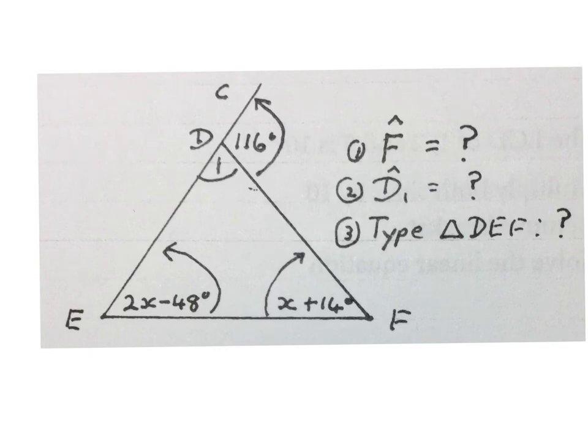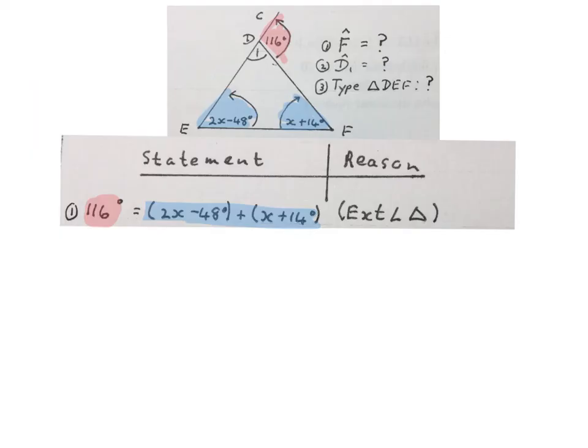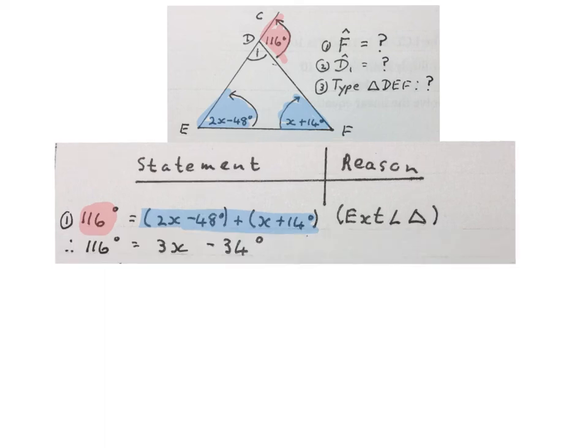Now a typical exam question might look something like this. They give us this triangle, all this information about the triangle. They ask us to work out the size of angle F, that whole angle down there, the angle D1, and then they say what type of triangle is this triangle DEF. There are different ways to answer this question. First we solve for X. We say this 116 degrees is equal to that plus that, exterior angle of a triangle. Now we solve for X.